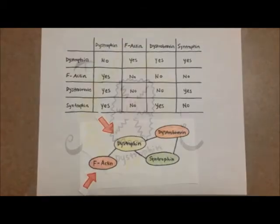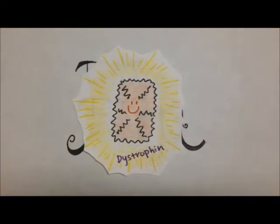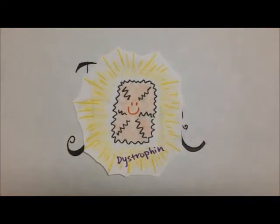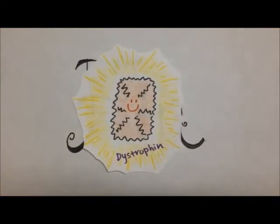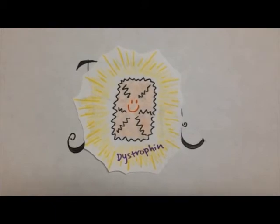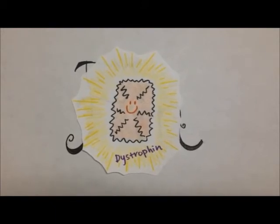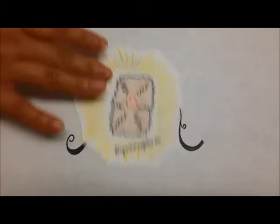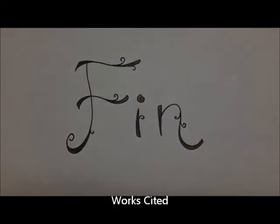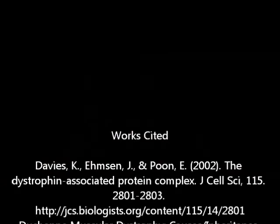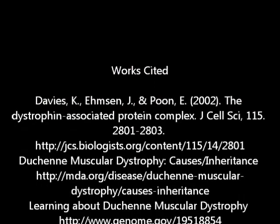The Duchenne gene is very important because a single mutation can negatively affect the dystrophin protein, which will interrupt muscle function for the entire body.